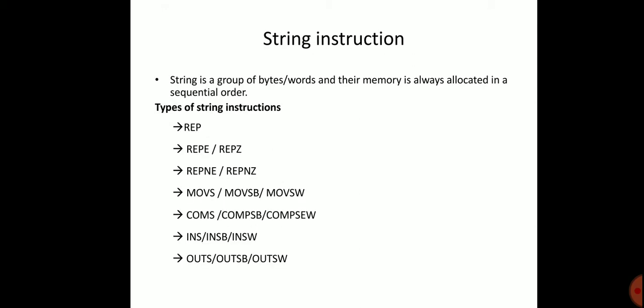Another instruction set is String Instructions. A string is a group of 16-bit data — that is, 2 bytes — forming a series of bytes or words where memory is allocated in sequential order. The types of string instructions include: Repeat (REP), Repeat Equal / Repeat Zero (REPE/REPZ), and Repeat Not Equal / Repeat Not Zero (REPNE/REPNZ).